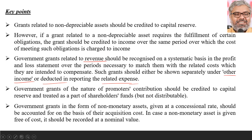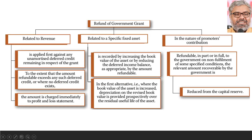Now, what happens in case of refund of a government grant? When there is a refund, whatever entries you passed, you reverse them. Simple logic: refund of government grant means reversal of the entry. The amount of reversal depends upon the amount of refund. Entry type is reversal — but the amount could be different and will depend upon the facts of the case.